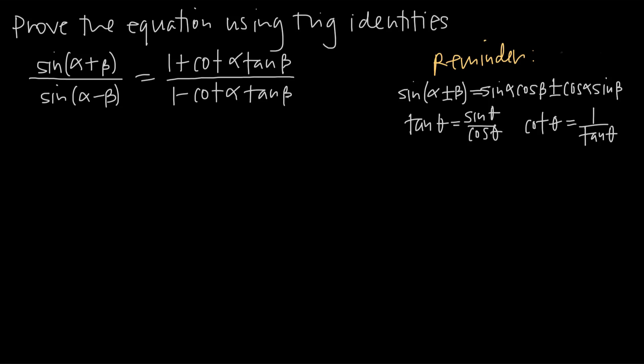In this video, we're talking about how to use trig identities to prove an equation. We're going to be focusing primarily on some difference identities, but we're also going to be using some quotient identities and reciprocal identities — bringing all of them together. The equation is: sine of (alpha plus beta) divided by sine of (alpha minus beta) equals 1 plus cotangent(alpha)·tangent(beta), divided by 1 minus cotangent(alpha)·tangent(beta).